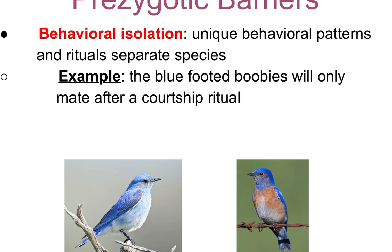Behavioral isolation occurs when species or subspecies can no longer interact due to mating rituals. For example, the blue-footed booby lives on the Galapagos Islands and will only mate after a specific courtship ritual. This ritualistic dance is unique to just the ones on the island in the natural ecological world — affectionately called the blue suede shoe dance — and it is pretty specific.